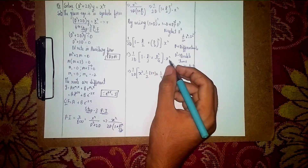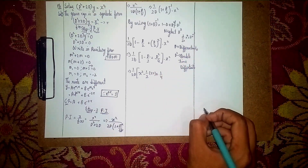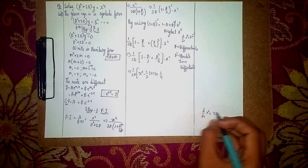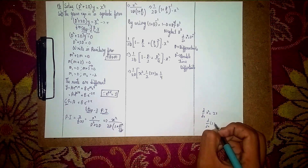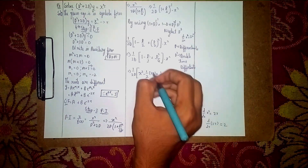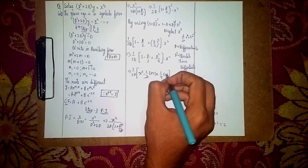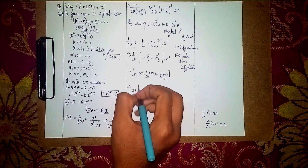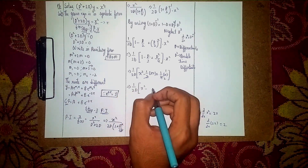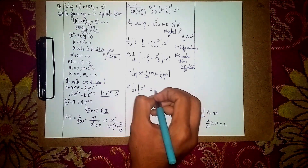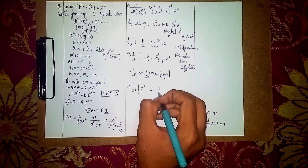For the D²/4 term, take 1/4 out: (1/4)·d²/dx²(x²). First d/dx(x²) = 2x, then d/dx(2x) = 2. So (1/4)·2 = 1/2. Now inside the bracket we have: x² − x + 1/2.